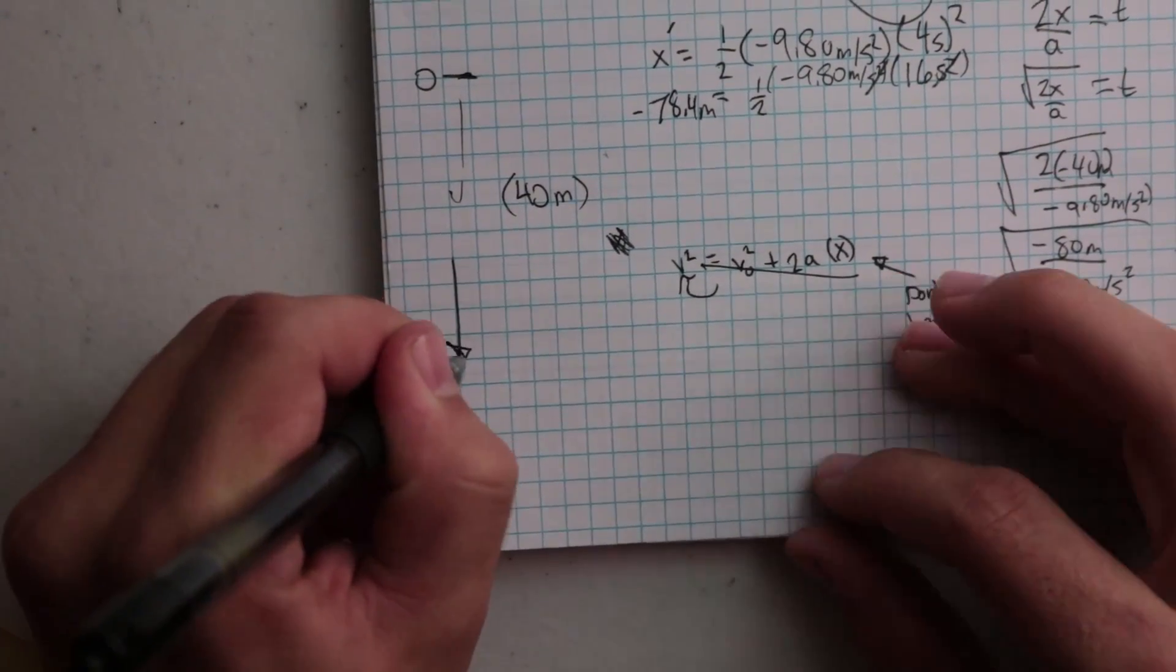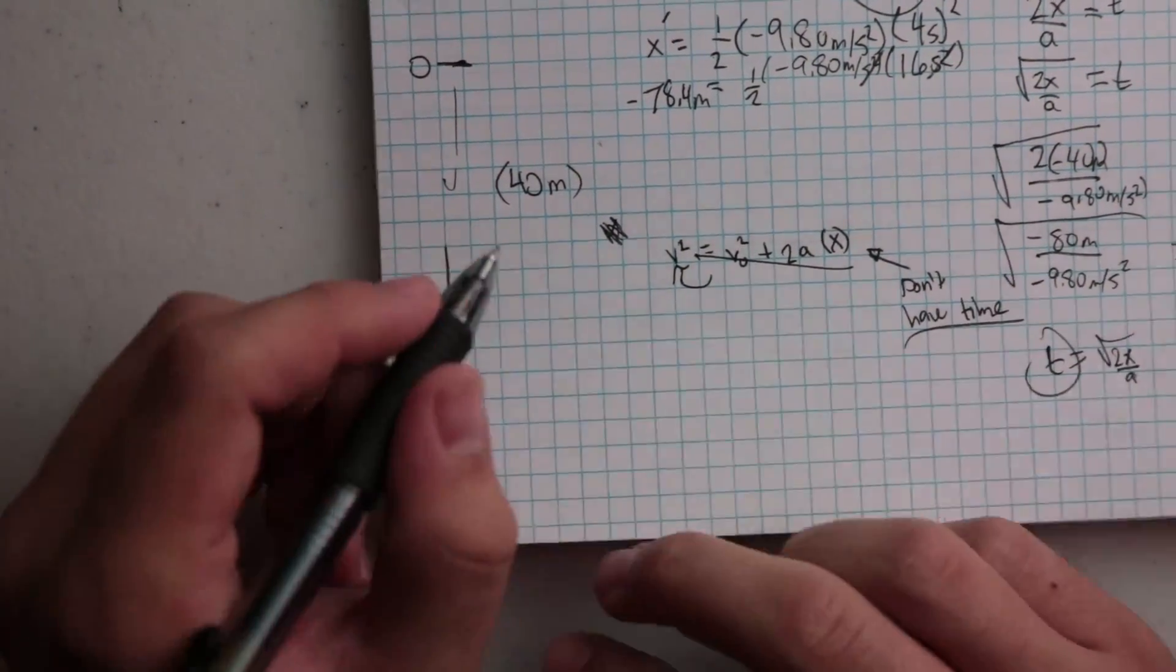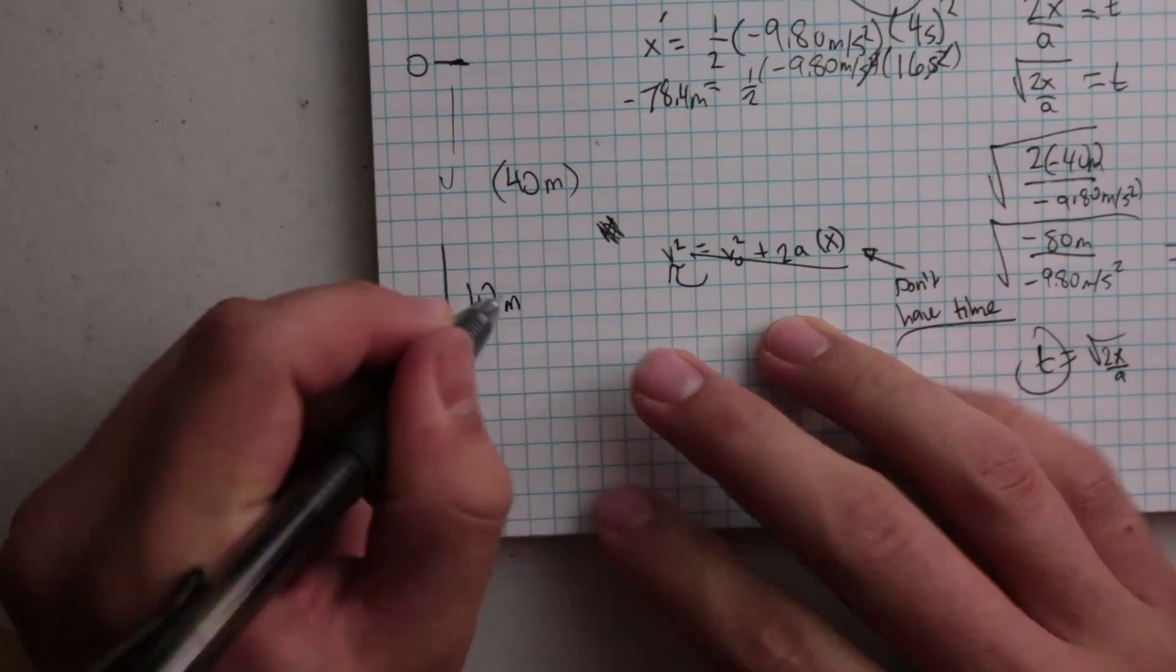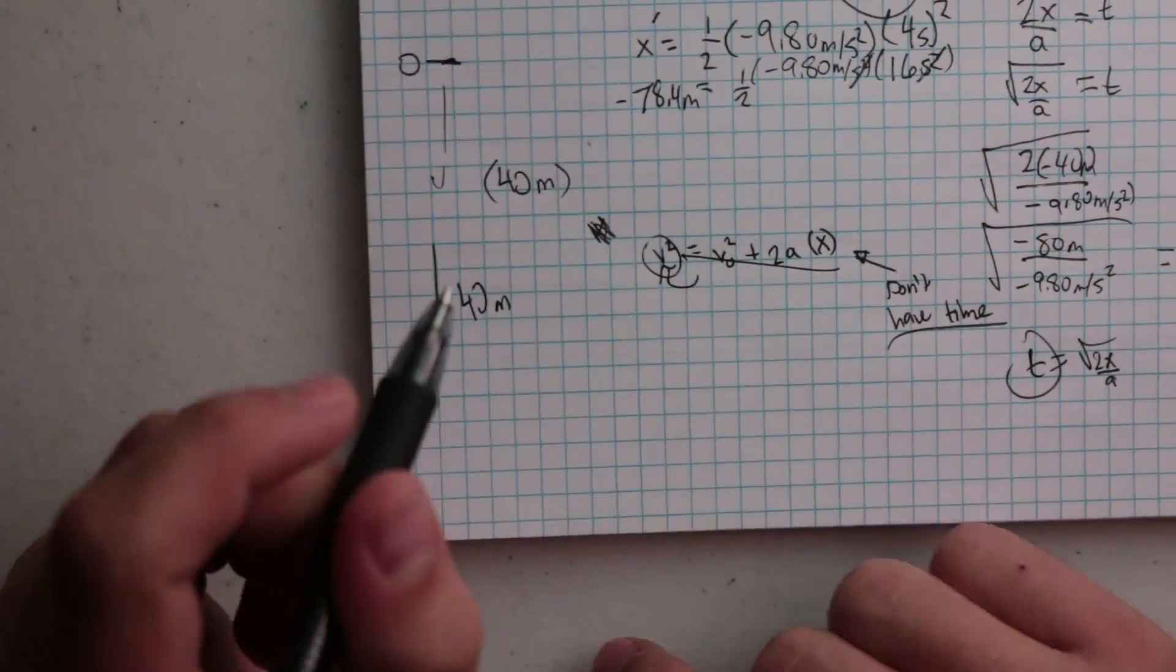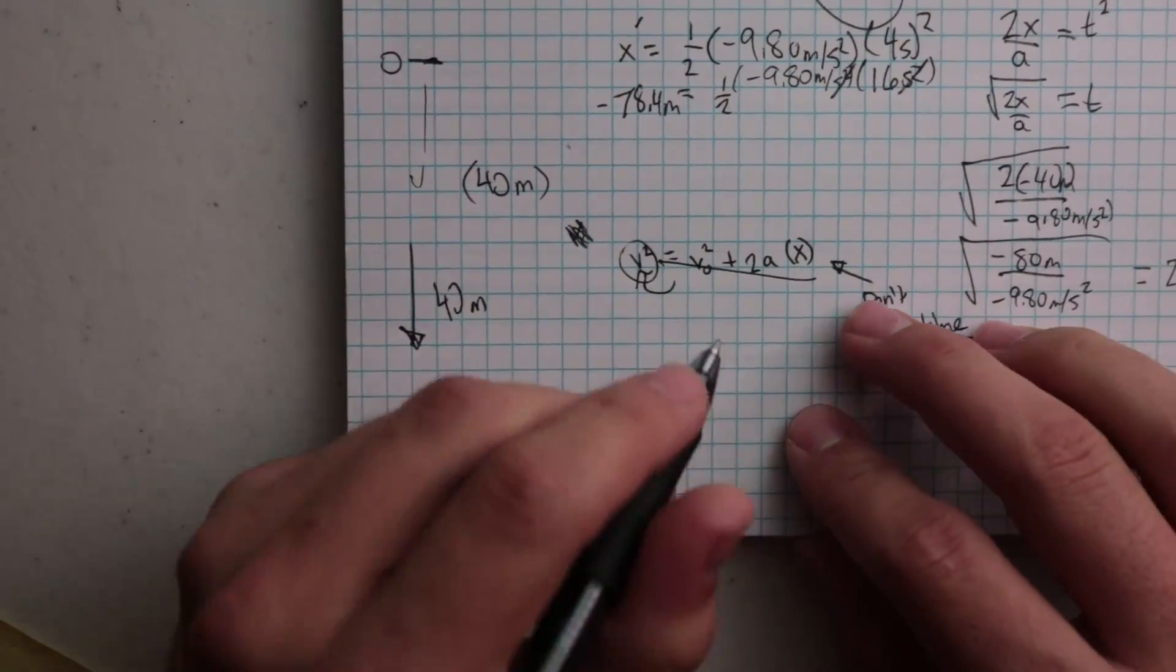So if I drop something 40 meters, we'll stick with that - then how fast is it going at the end of those 40 meters without knowing how long it's fallen?